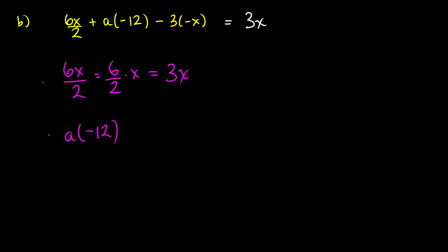Well, if we have a negative number and we multiply it by a positive number, we just multiply the numbers together and we get the negative version of it. So this is like a times 12 times negative one. So this will give us 12a times negative one.